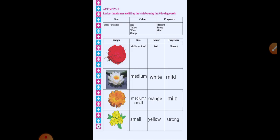Third picture is daisy. It is medium and small size flower. It has orange color. But in real, it has many different colors. Like pink, red, yellow, white. Right? And it has mild fragrance.